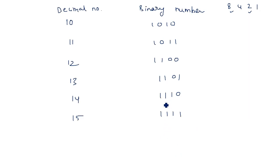From 0 to 15, that is a total of 16 combinations of information. What we have written here in terms of the 8-4-2-1 code is nothing but the normal standard binary representation.